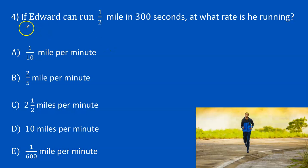Let's look at unit rate story problem number four. If Edward can run a half a mile in 300 seconds, at what rate is he running?